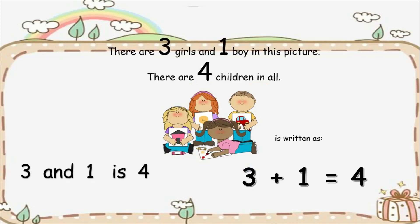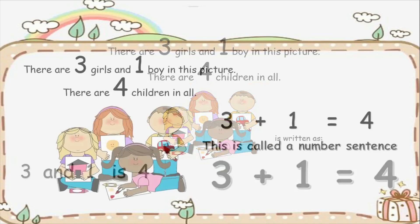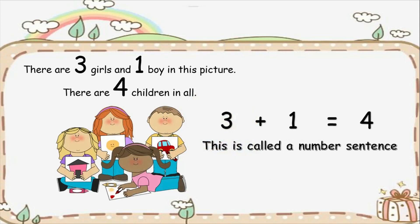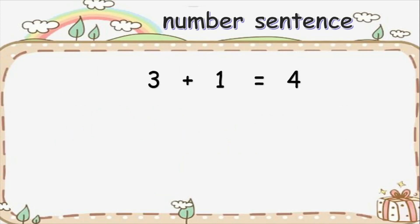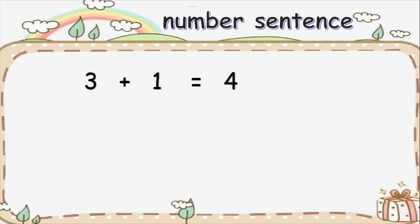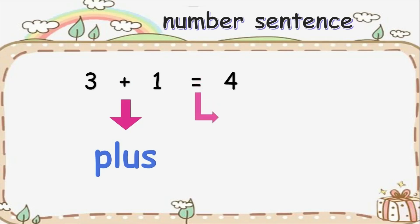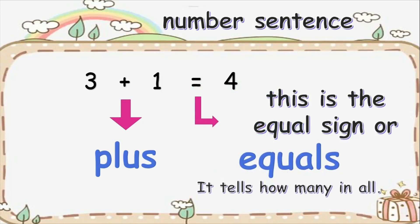In numeracy, three and one is four is written as a number sentence. This is called a number sentence. In the number sentence, we use this sign. Do you remember what this one is called? We call it the plus sign, or simply we say plus. And this is called the equal sign, or equals. Equals tells us how many in all.